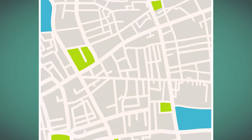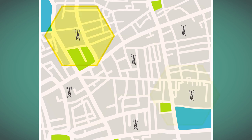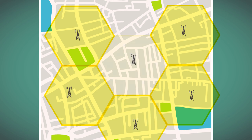A carrier has an extensive network of cell sites and switches designed to send and receive signals from everyone's cell phones. To maximize coverage and network availability, carriers place cell sites throughout communities in strategic patterns, as each site can only cover a specific area and number of users.